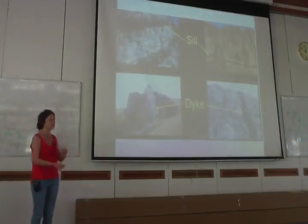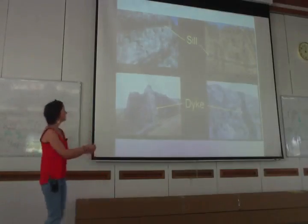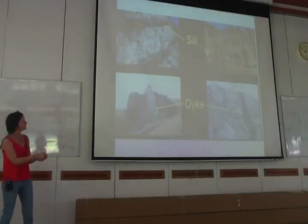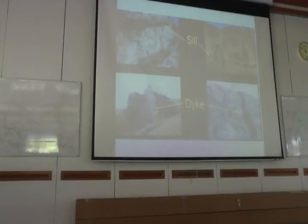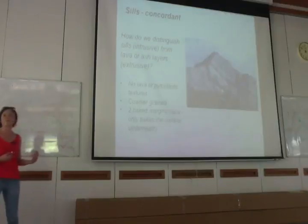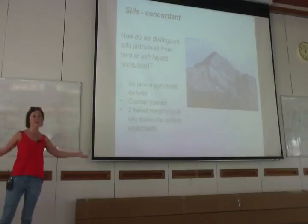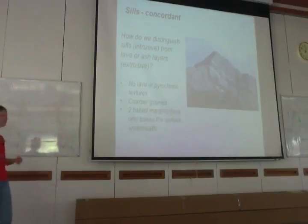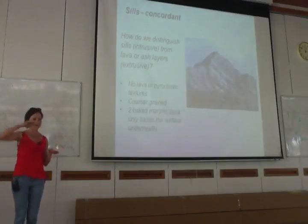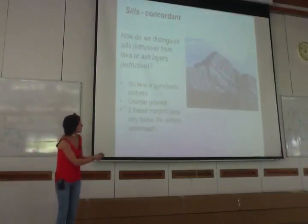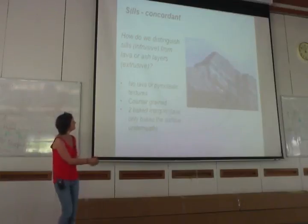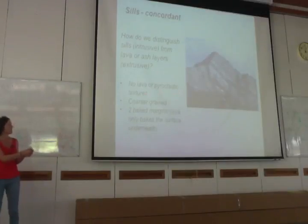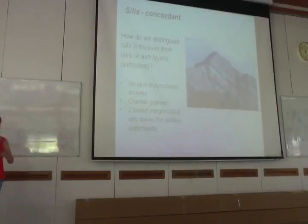On the edge of the intrusion itself, it will be much finer-grained than the middle because it cooled more quickly — we call that a chilled margin. To distinguish between a lava flow and a sill: lava will only have one baked margin because it has air on one side and rock on the other. If you see a rock with baked margins on both sides, you know it must have intruded into the crust rather than flowed over it. Intrusions also tend to be coarser-grained because they're not extrusive, and you don't get pyroclastic textures or pahoehoe structures.